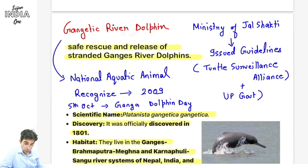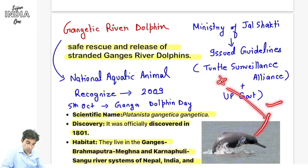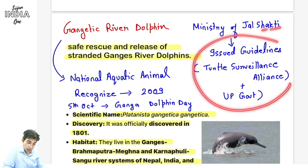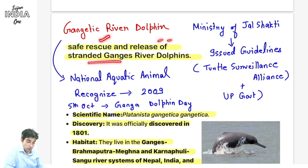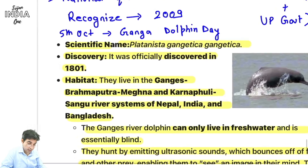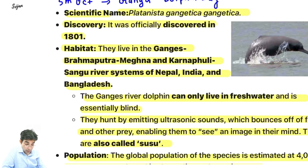Ab last topic hai Gangetic River Dolphin. Yeh kyun news mein hai? Ministry of Jal Shakti ne abhi guidelines issue ki, Turtle Surveillance Alliance aur UP Government ki help se, because yeh jo dolphin hai Ganga mein milti hai - kai baar yeh trap ho jaati hai canals vagera mein, fir isko evacuate kaise karein. Kyunki dolphin hamara national aquatic animal hai. Yeh guidelines hain: Safe Rescue and Release of Stranded Ganga River Dolphin. 2009 mein recognize kiya tha, 5 October ko Ganga Dolphin Day manate hain.